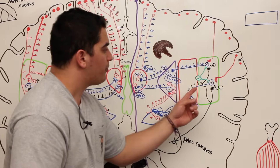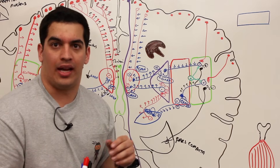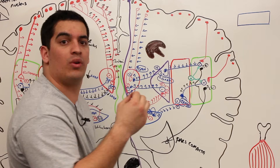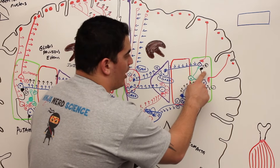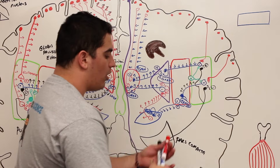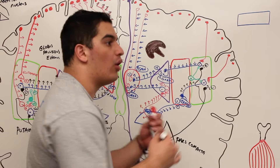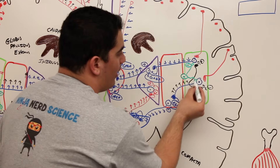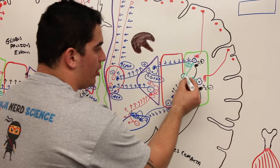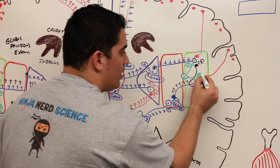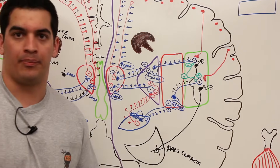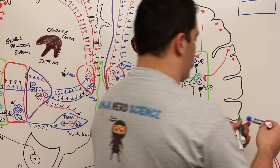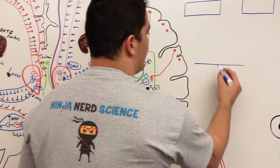Now let's talk about how we get the tremors and rigidity. Remember the cholinergic neurons that release acetylcholine — they love to oppose dopamine. So if dopamine is stimulating a neuron, cholinergic neurons would want to inhibit it, and if dopamine is inhibiting a neuron, cholinergic neurons would want to stimulate it. A useful way to think about this is a seesaw: acetylcholine on one side, dopamine on the other.